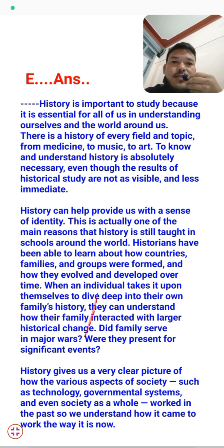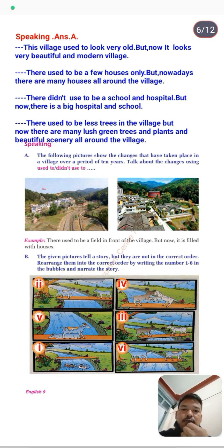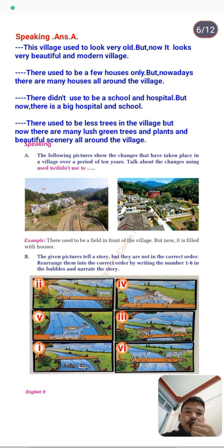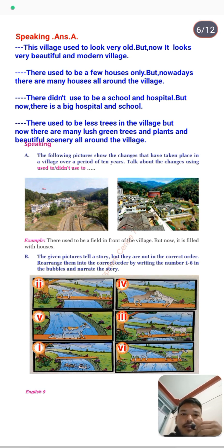This is how students can discuss the importance of history in class. Now moving to the speaking part. Here we have two pictures showing changes that have taken place in a village over 10 years. You need to talk about the changes using 'used to' and 'didn't use to.' The first picture shows the village 10 years ago and the second picture shows the village today. You have to make a story describing what changes you see.